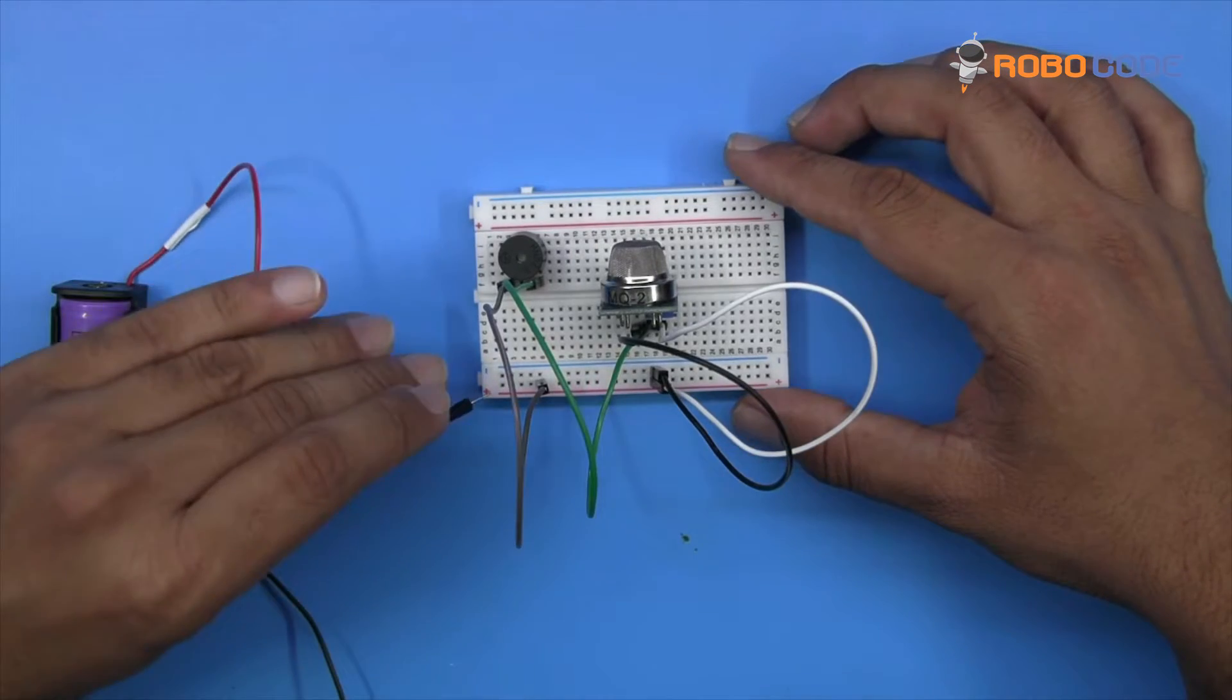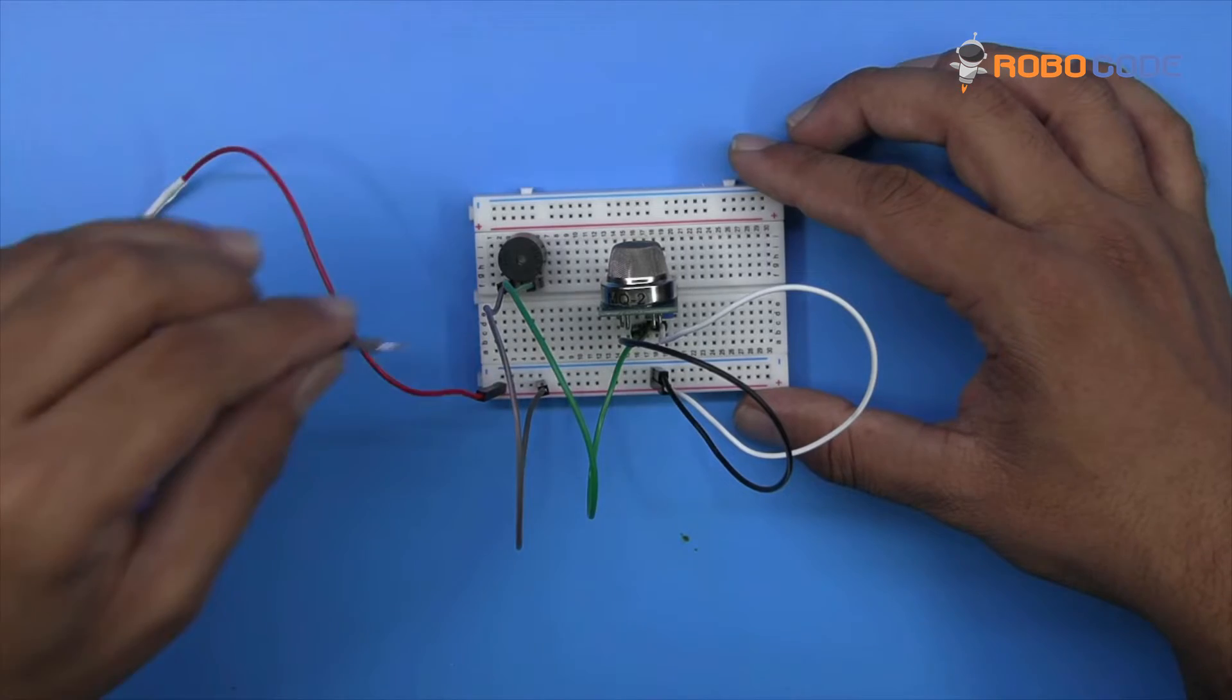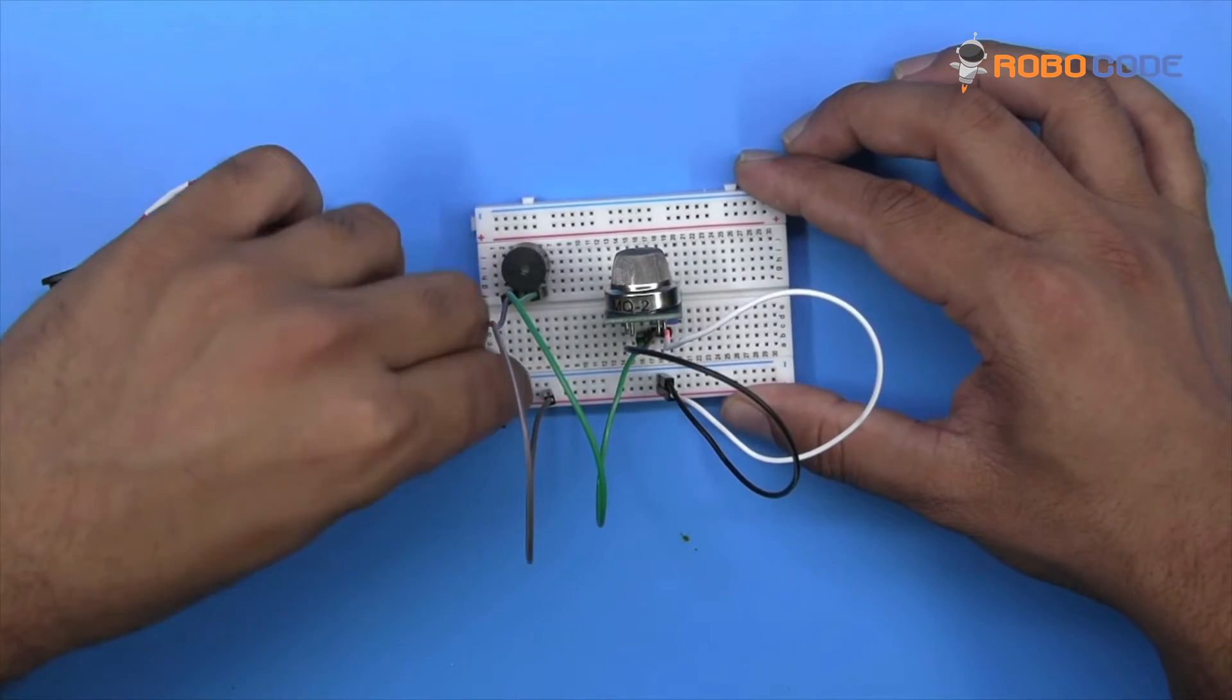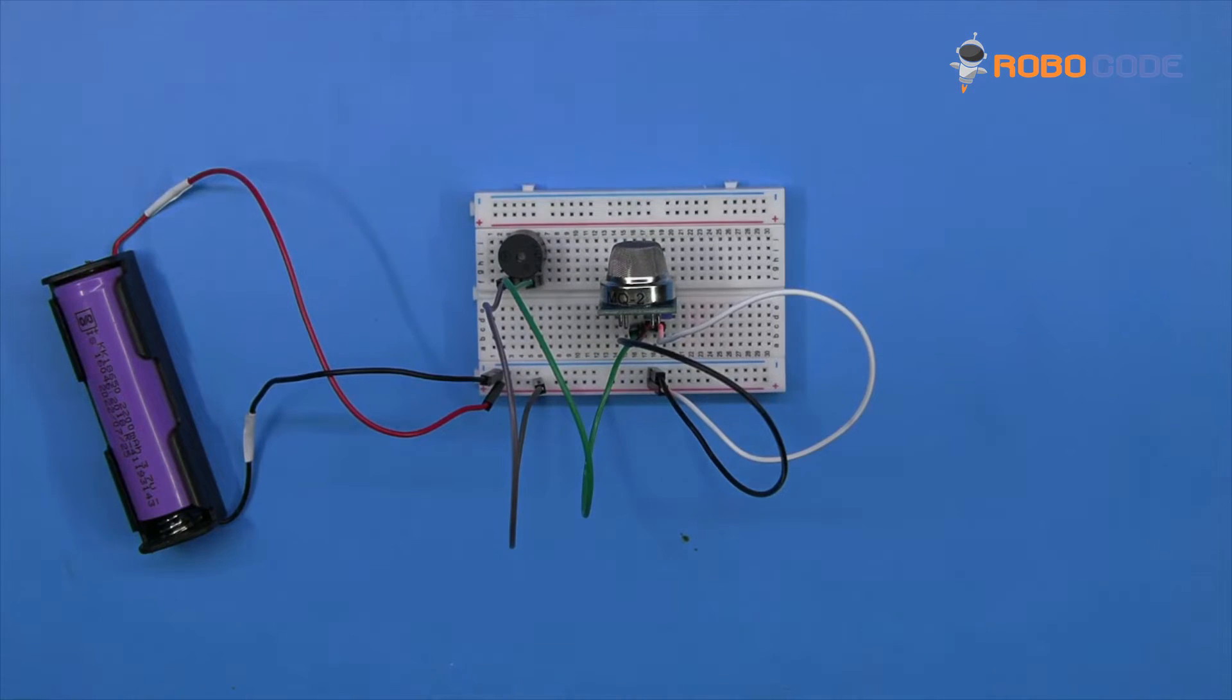In this way, the circuit is complete. Now take the red wire of the power supply and insert it on the last row and the black wire on the second last row.